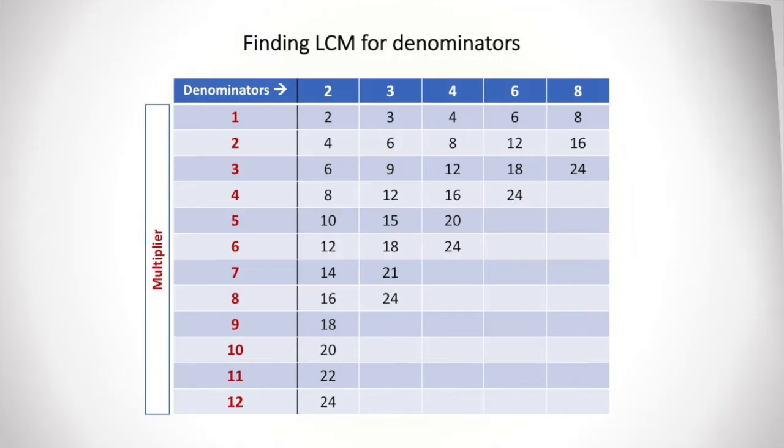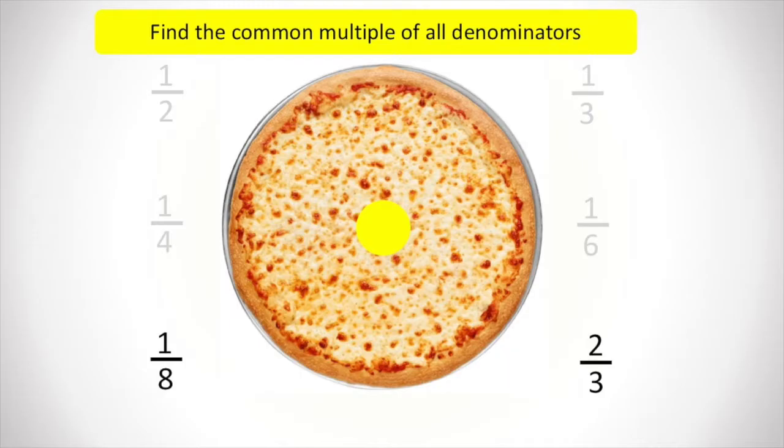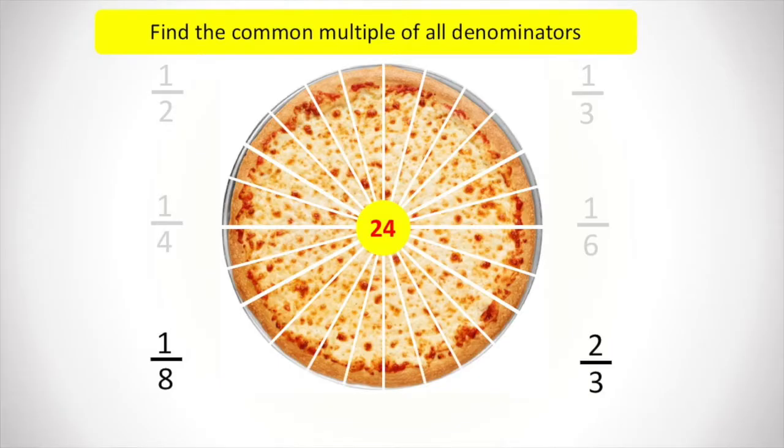Let's do some more examples with the pizza. In this case, we need to split it into one eighth and two third. Again, looking at the denominators of eight and three, the lowest common multiple will be 24. We split the pizza into 24 pieces and then find out how many pieces will each person get. The one eighth one will get three pieces and the two third one will get 16 pieces.